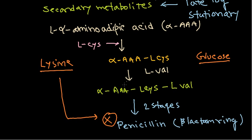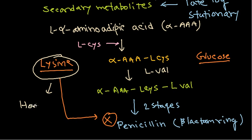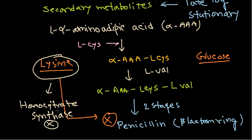The enzyme homocitrate synthase is a very important enzyme during the production of penicillin. Lysine acts as a feedback inhibitor for that enzyme — it inhibits homocitrate synthase. Since homocitrate synthase is an important enzyme during the formation of penicillin, its inhibition blocks penicillin synthesis.